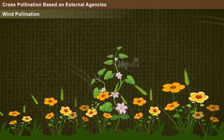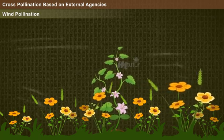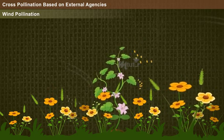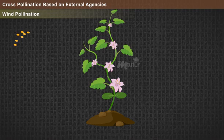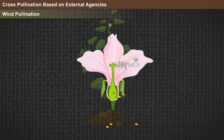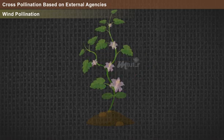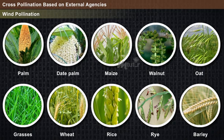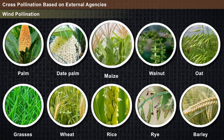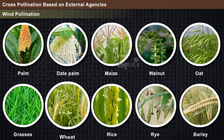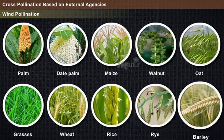Wind pollination: in this type of pollination, the pollens of the male flower may be carried hundreds of kilometers away by wind. During travel, pollen grains that come in contact with the stigma of a female flower undergo fertilization. The sad note is that the majority of pollens get wasted. Examples include palm, date palm, maize, walnut, oat, grasses, wheat, rice, rye, barley, etc.